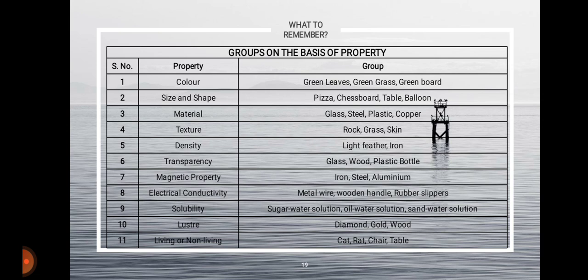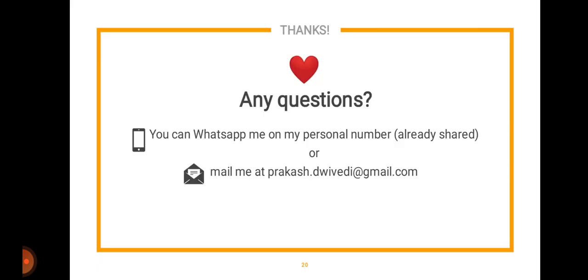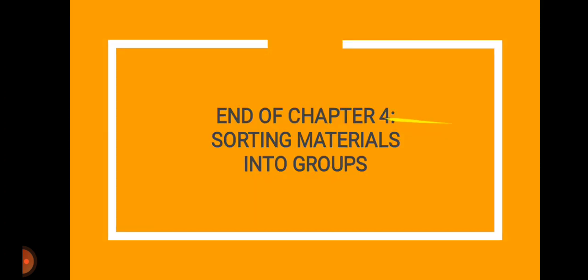What you need to remember for this chapter is the groups on the basis of their properties — the same table we discussed at the beginning. If you remember this table, it will help you understand and remember the entire chapter. If you have any questions, you can WhatsApp me on my personal number or email me at prakash.dvd@gmail.com. This is the end of Chapter 4 — 'Sorting Materials into Groups.' Next week we will discuss Chapter 5. Thank you everyone for joining, have a nice day!